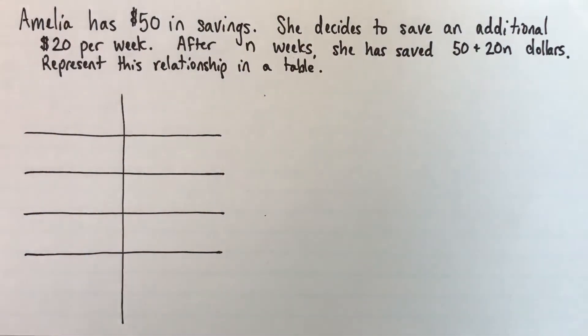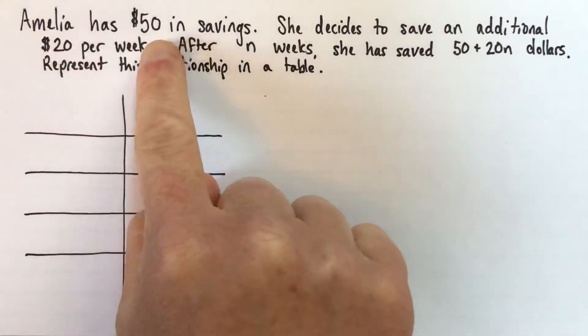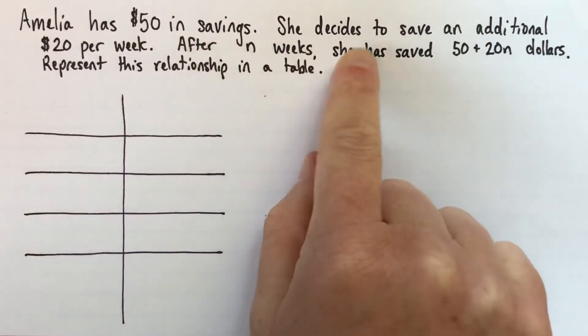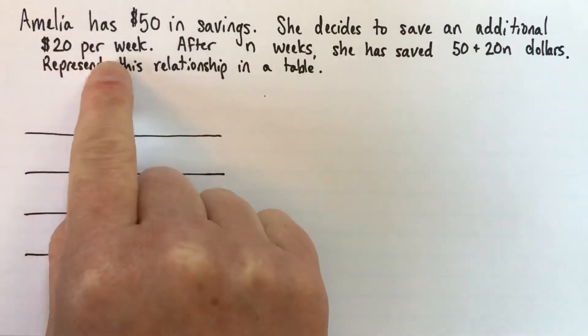Hi, I'm going to show you how to make a table of values to represent a relationship. So here's the story we've got. Amelia has $50 in savings, and then she decides she's going to save an additional $20 per week.